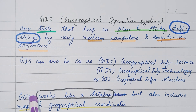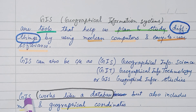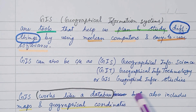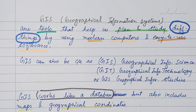GIS works like a database, but also includes maps and geographical coordinates.